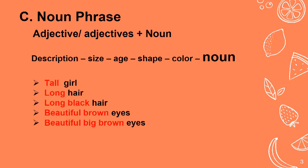Kalau kata sifatnya lebih dari satu, di dalam bahasa Inggris kita mengenal urutan. Pertama, description — bisa beautiful, handsome, expensive. Kemudian size — big, small, little. Lalu age — young, old, modern. Kemudian shape — round, oval, square. Dan color — warna. Baru noun.